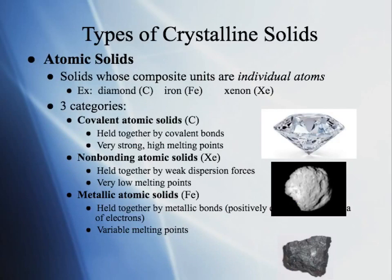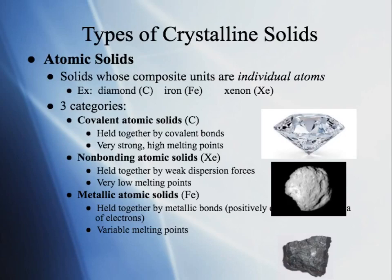The last type of crystalline structure is atomic solids — solids whose composite units are individual atoms. There are three subcategories. First, covalent atomic solids, where atoms are held together by covalent bonds — these are very strong with high melting points. The classic example is diamond, made of nothing but carbon atoms bonded in a crystalline structure.